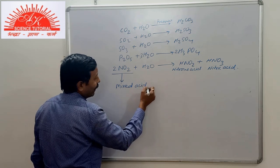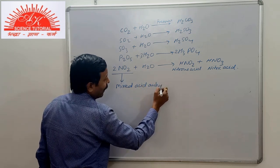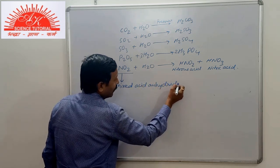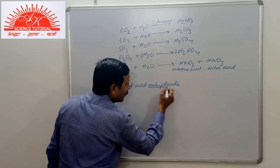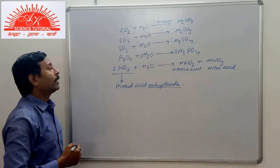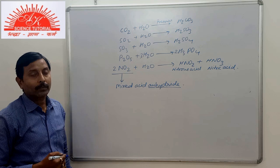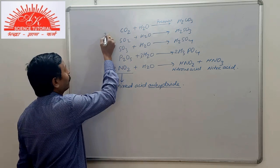Mixed acid anhydride. Anhydride means, an means without, hydride for water. So it is acid without water. Now, the third method of preparation.